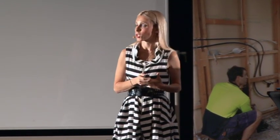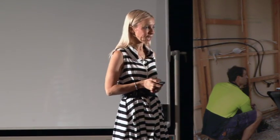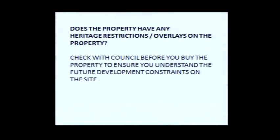Check if the property has any heritage restrictions or conservation overlays. Just go to the council customer service desk and ask for a council search. Don't freak out at heritage-listed properties — you just need to know what you can and can't do. I've made over $750,000 doing a straight subdivision on a heritage-listed property, because everybody got scared of the label. You've got to know what's fact from fiction.